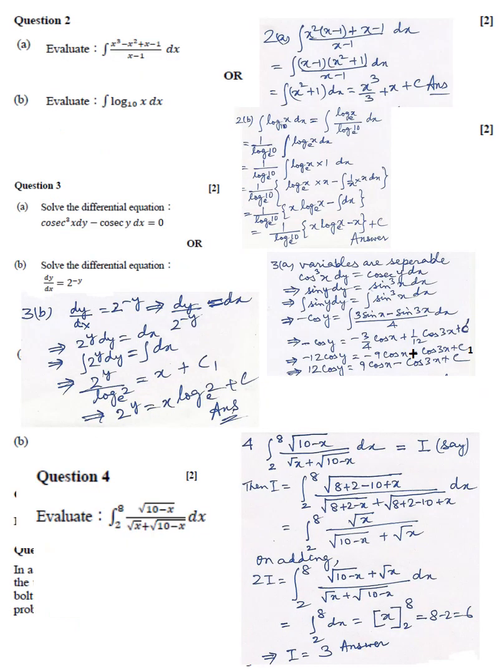Question 2A: Answer X cubed upon 3 plus X plus C. Question 2B: Answer 1 upon log 10 to the base E multiplied by X log X to the base E minus X plus C. Question 3A: Answer 12 cos Y